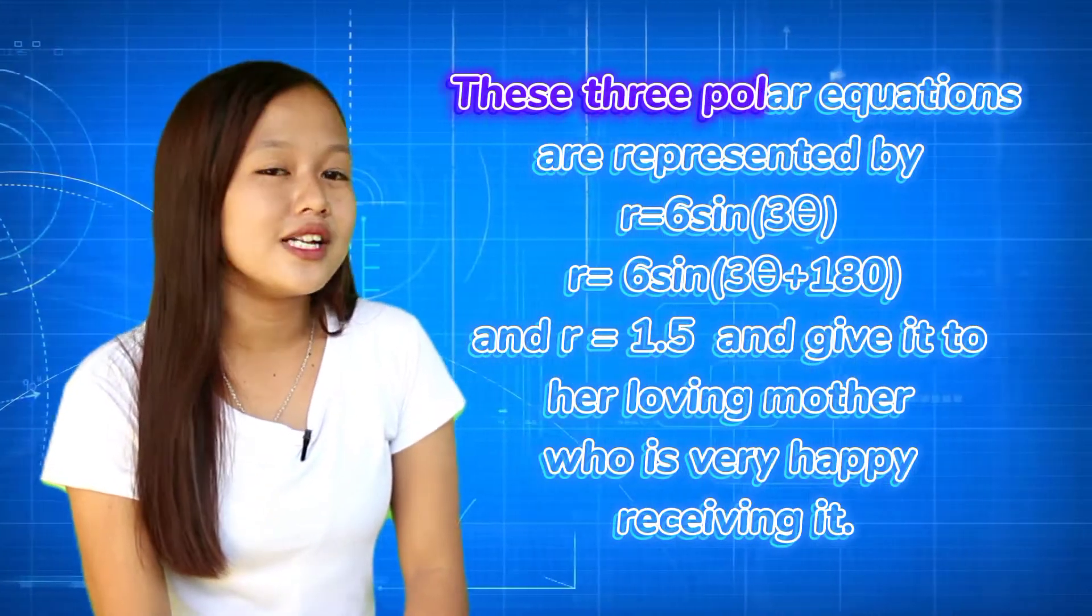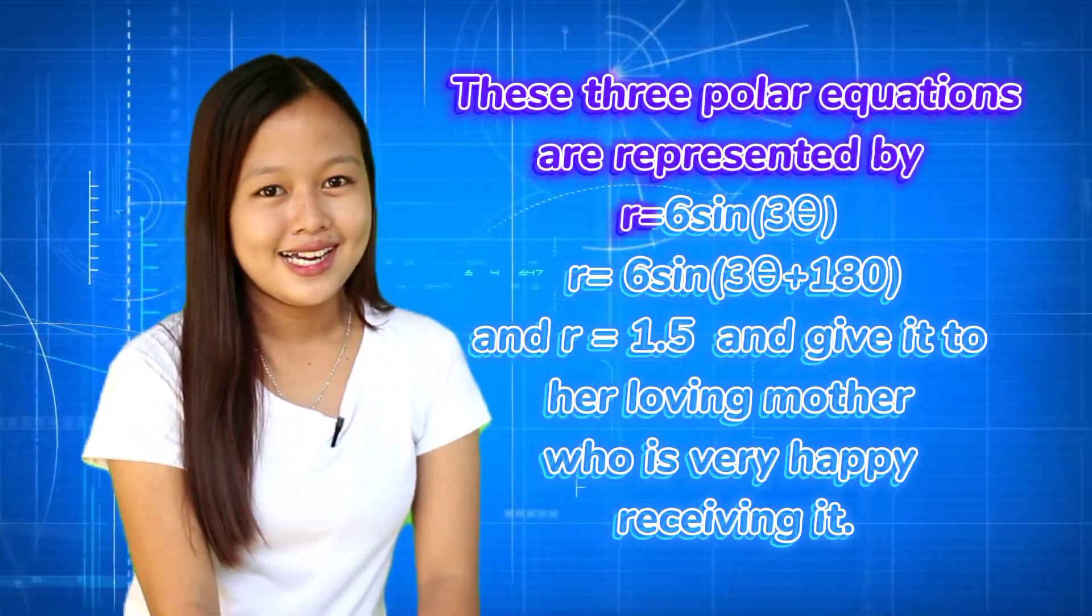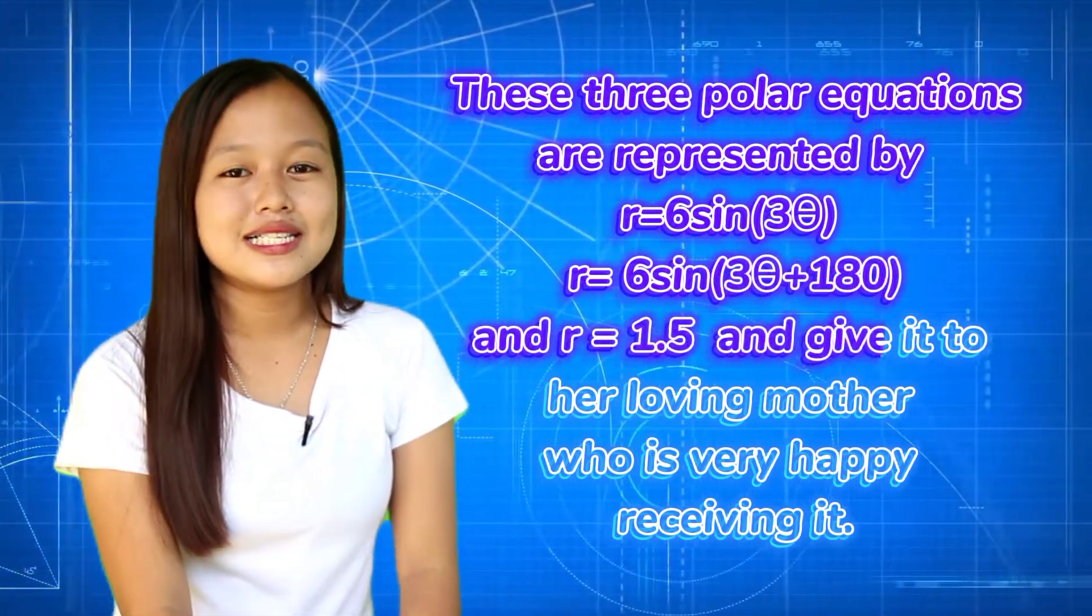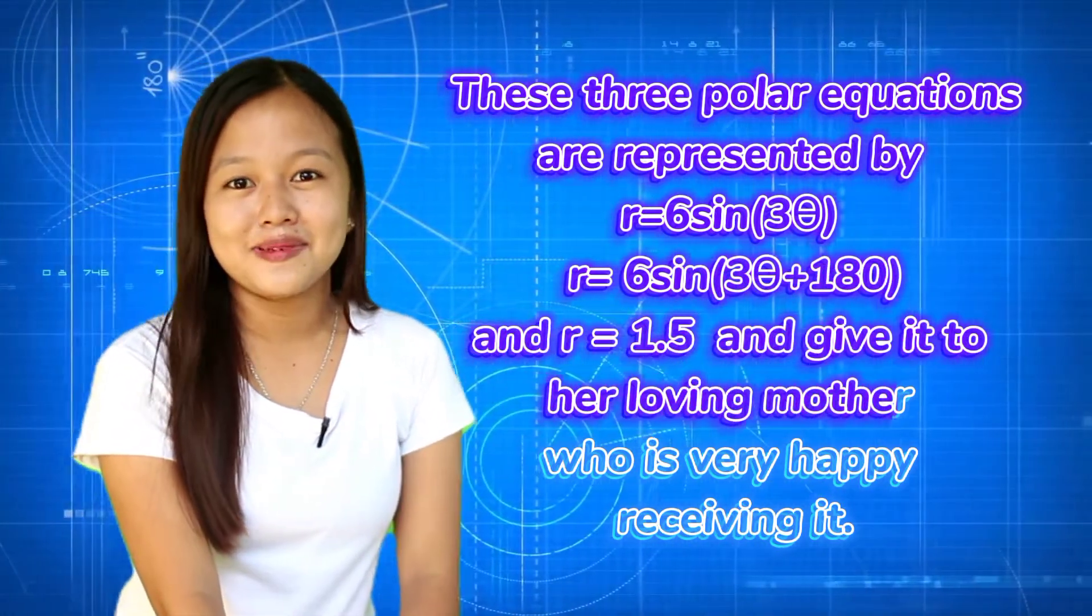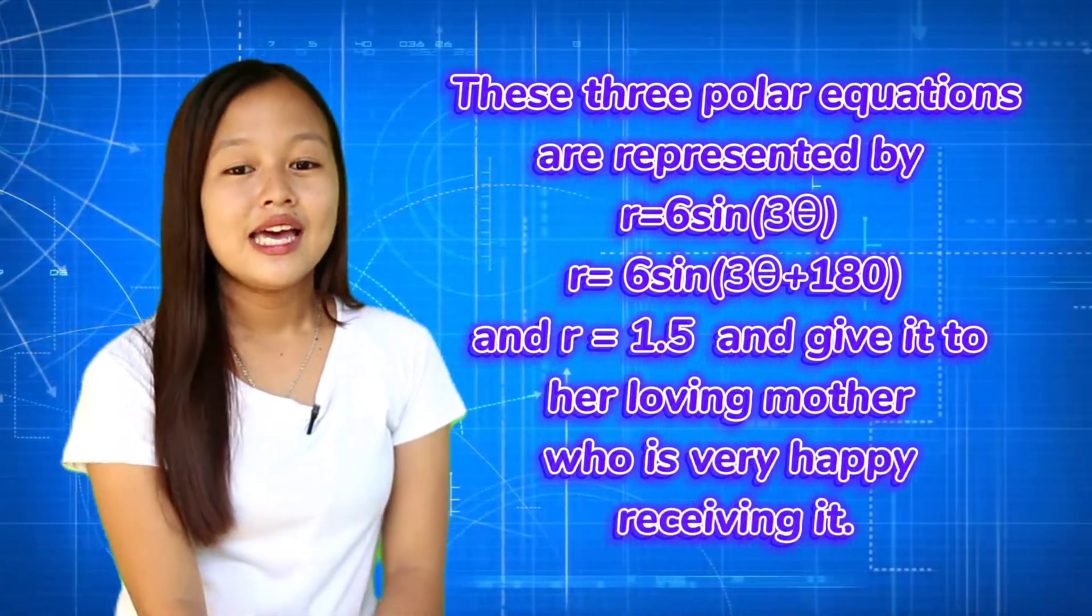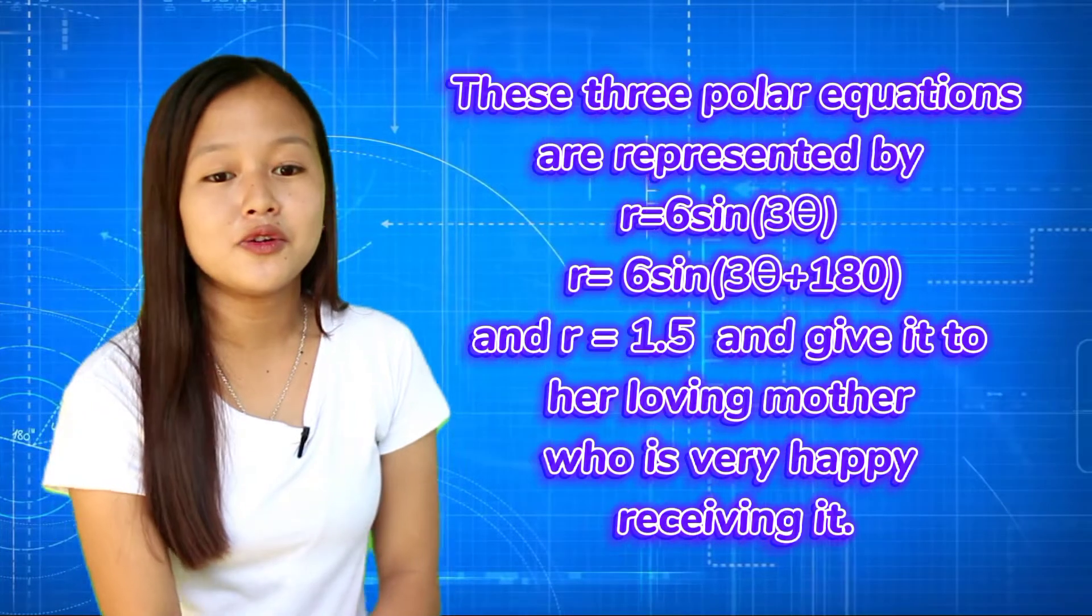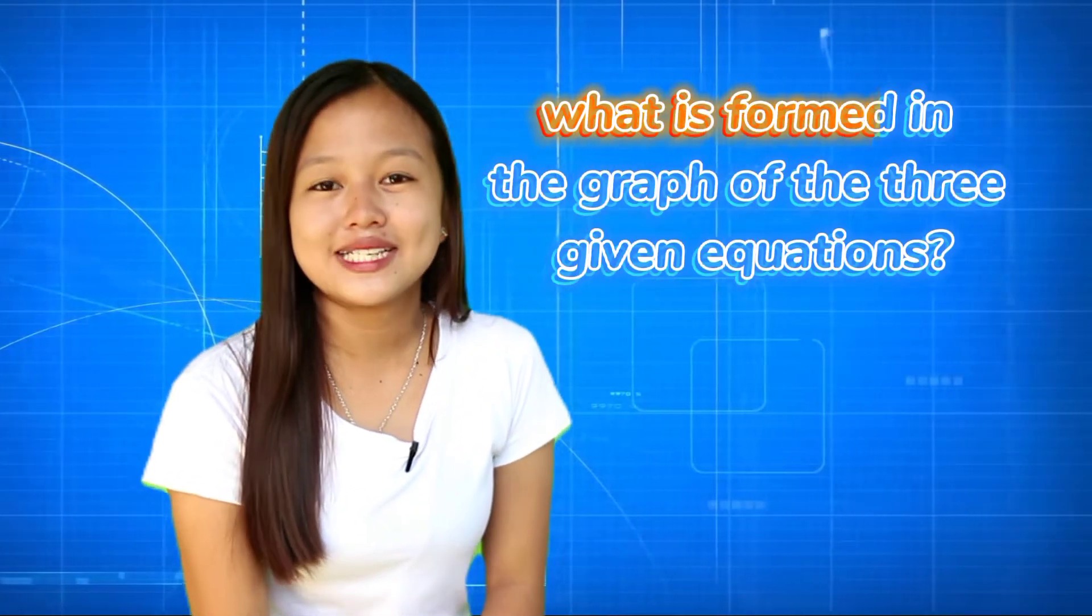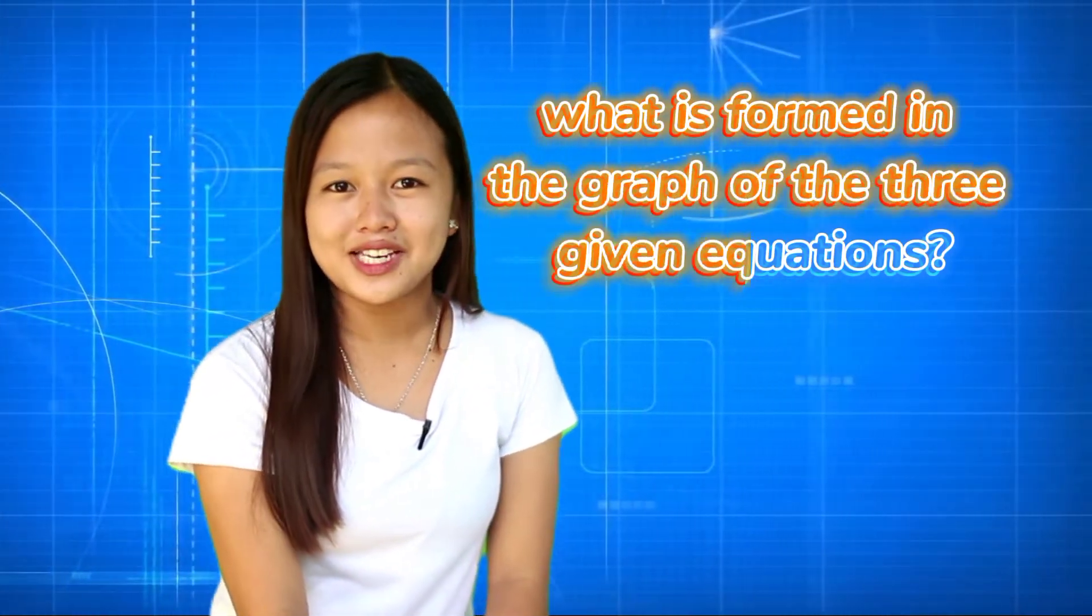These three polar equations are represented by R equals 6 sine 3 theta, R equals 6 sine 3 theta plus 180, and R equals 1.5. And give it to her loving mother, who will be very happy receiving it. And now, our task is to see what is formed in the graph of the three given equations.